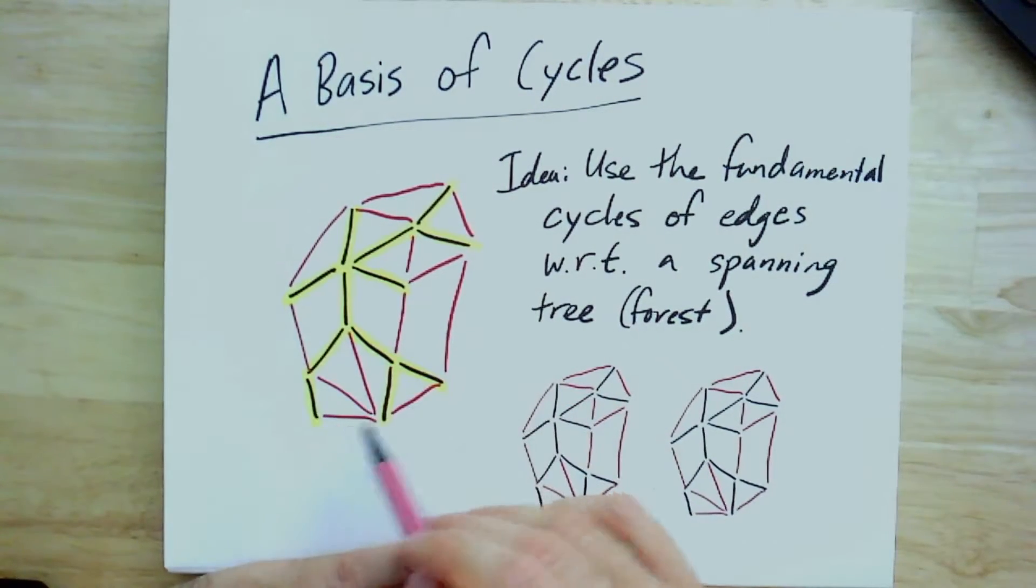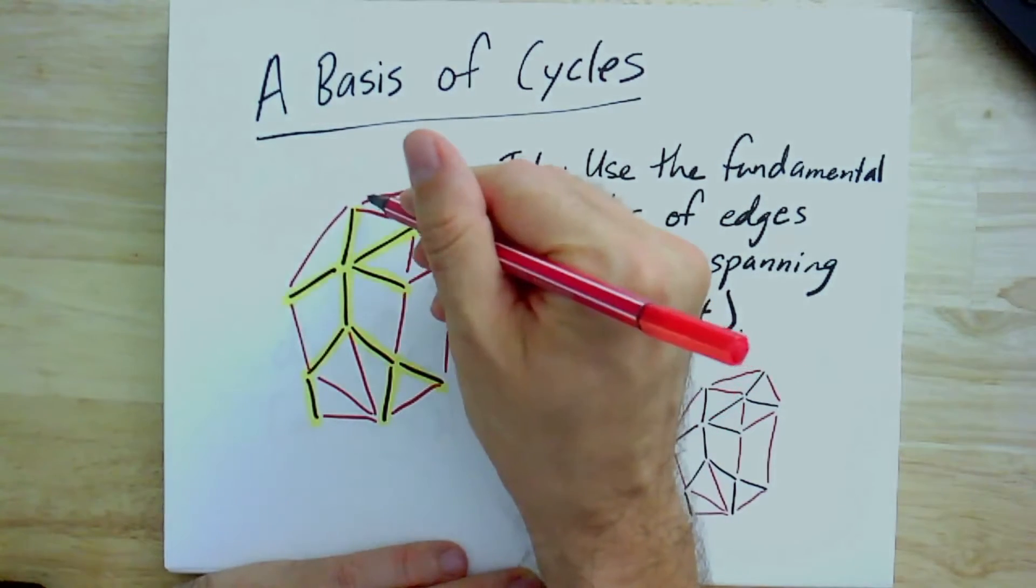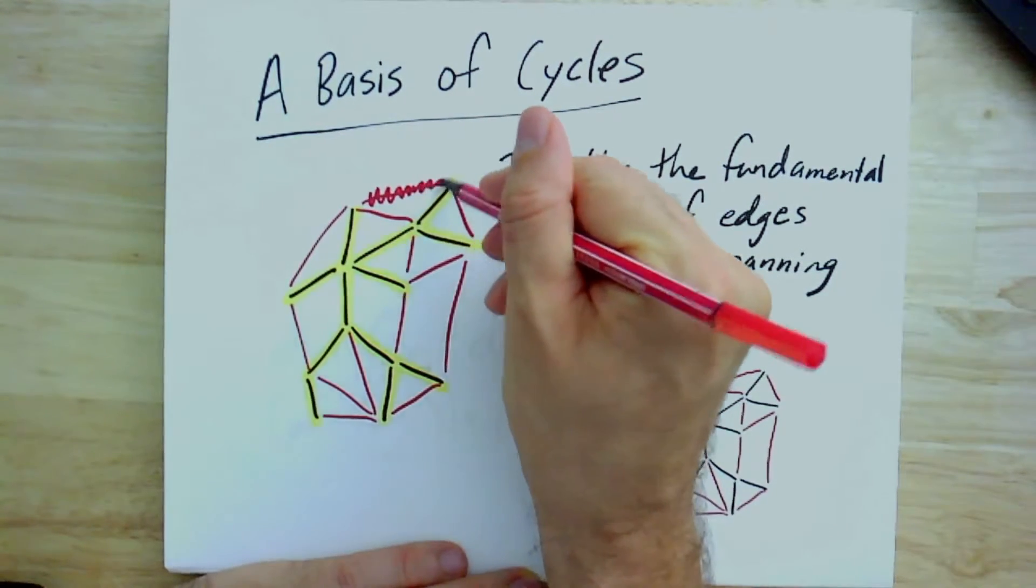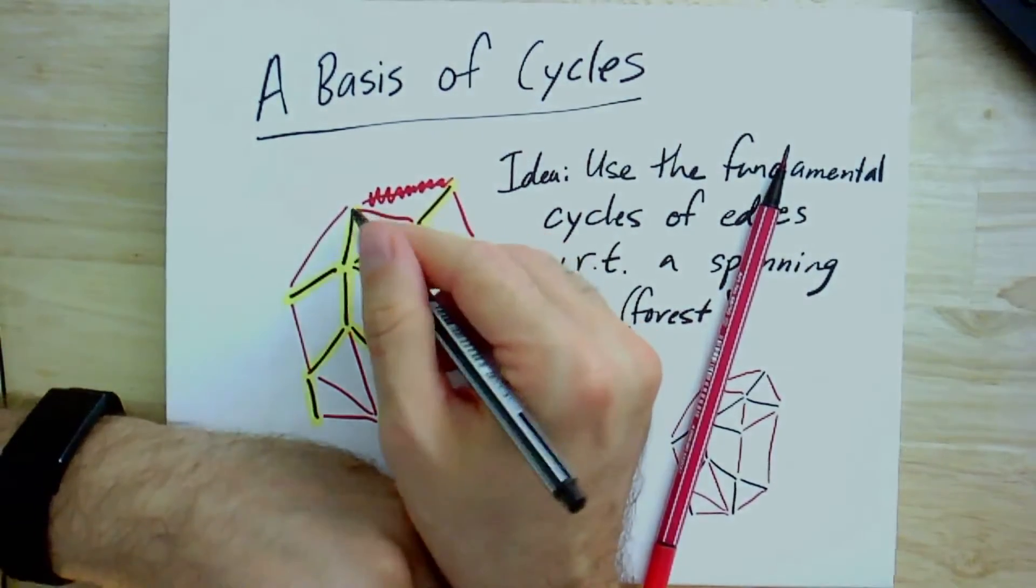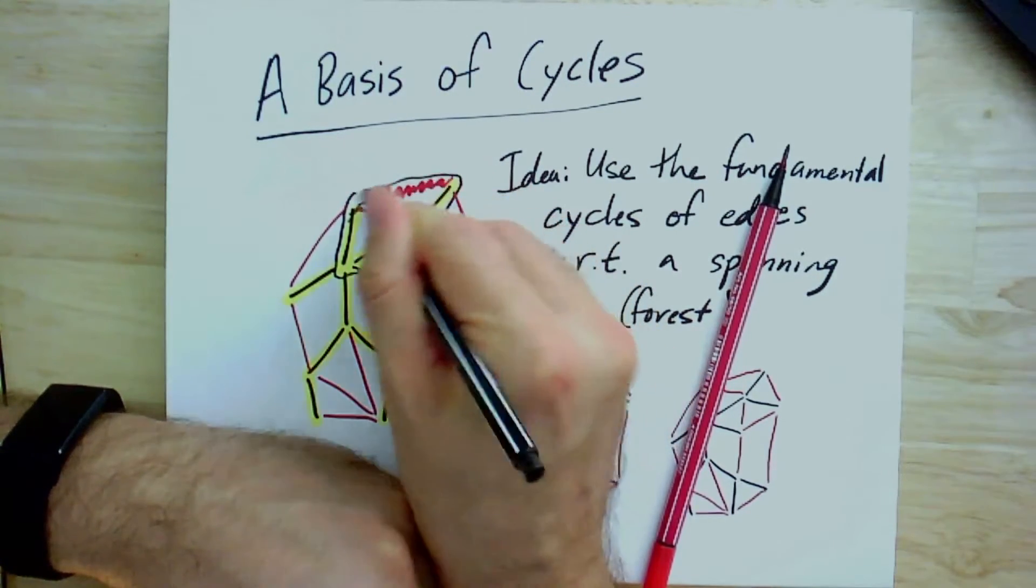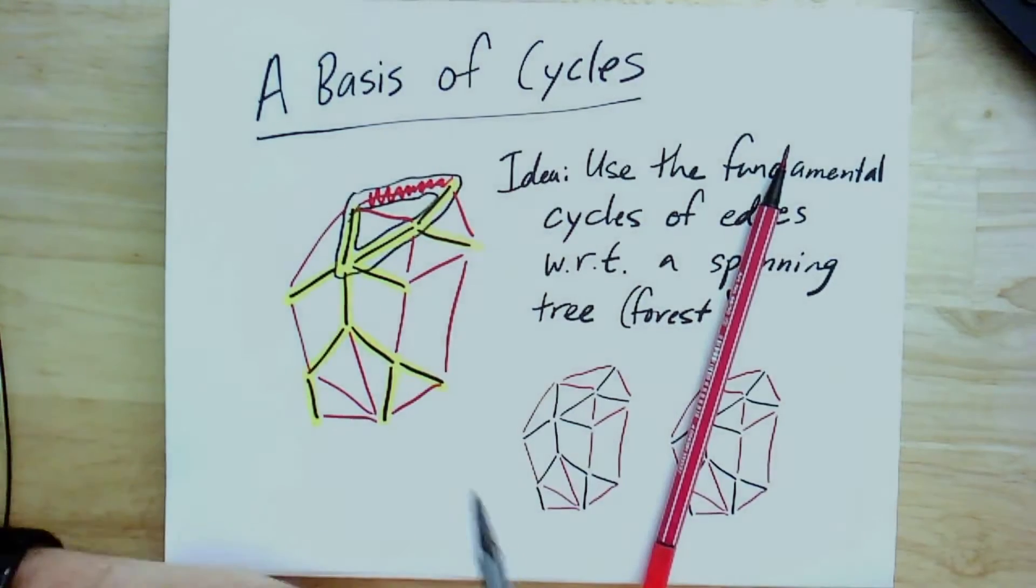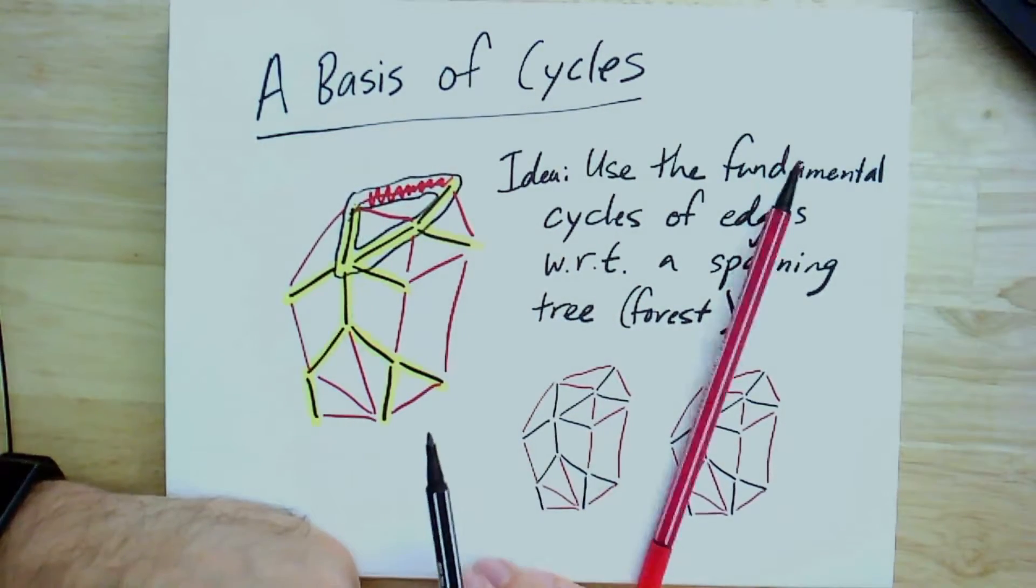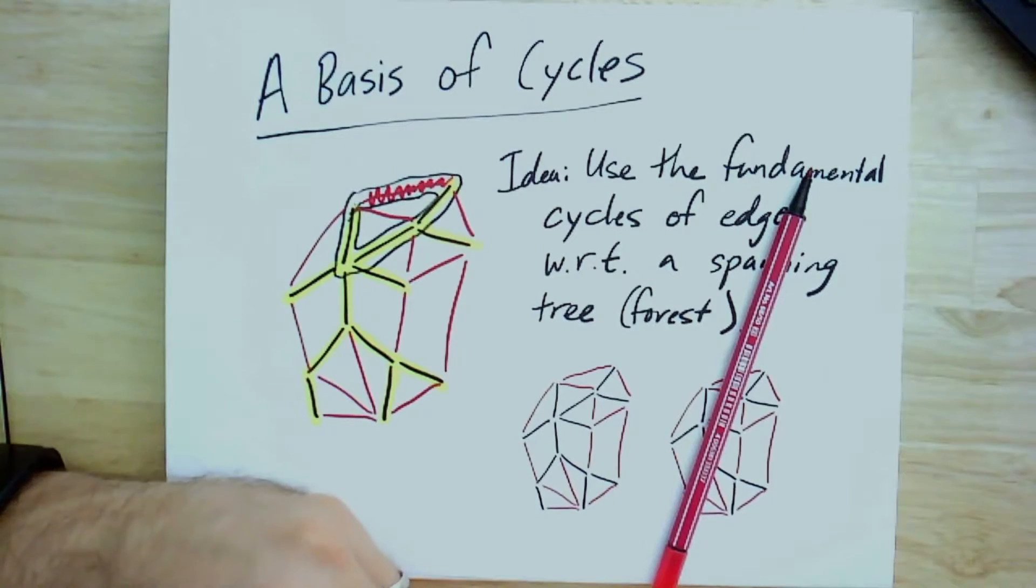I'm going to show you at least that you could get a generating set, and I'll leave it to you to check that these are actually independent. So here's the idea. We know that if I take a graph, and this one happens to be planar, this is true even for non-planar graphs, and I look at a spanning tree. So I've highlighted a spanning tree in this graph. We know that every other edge that's not in the spanning tree has a fundamental cycle. And that fundamental cycle is the, if I take this particular edge here, that is the cycle which has all its other edges inside the spanning tree, all the edges except for that one, because it's formed by taking the unique path between the ends of that edge in the spanning tree.